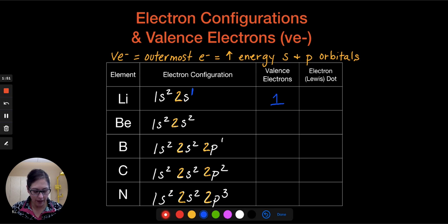In the second one, we see that there are actually two of them, so now we see that there are two of them in the 2S2, and so we have two valence electrons.